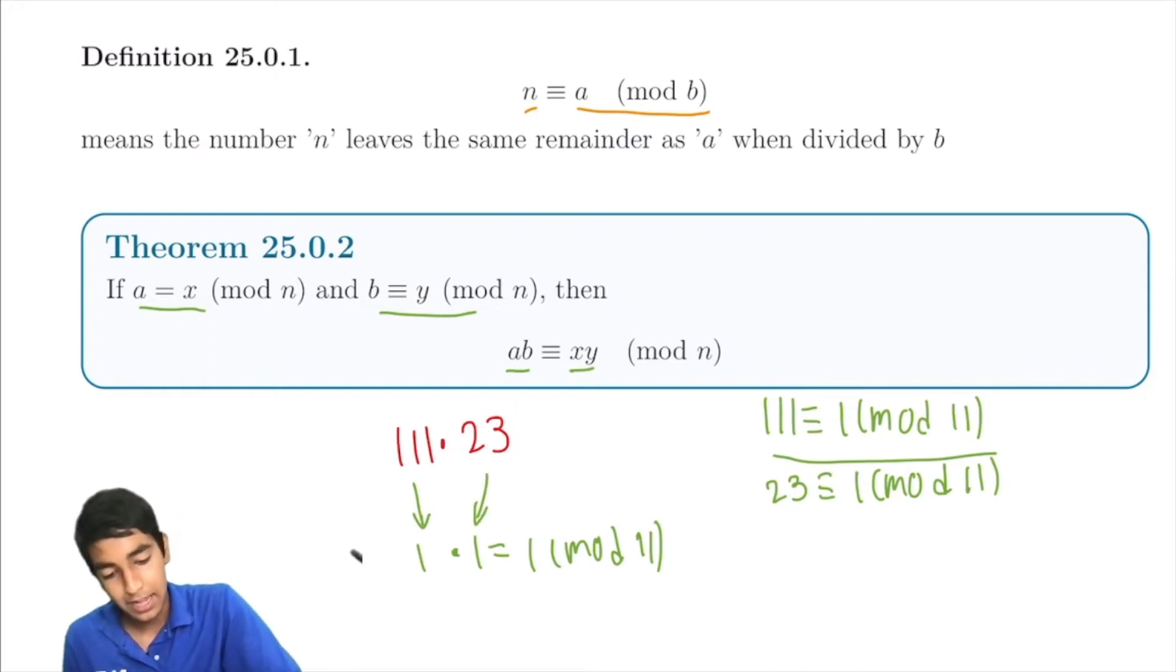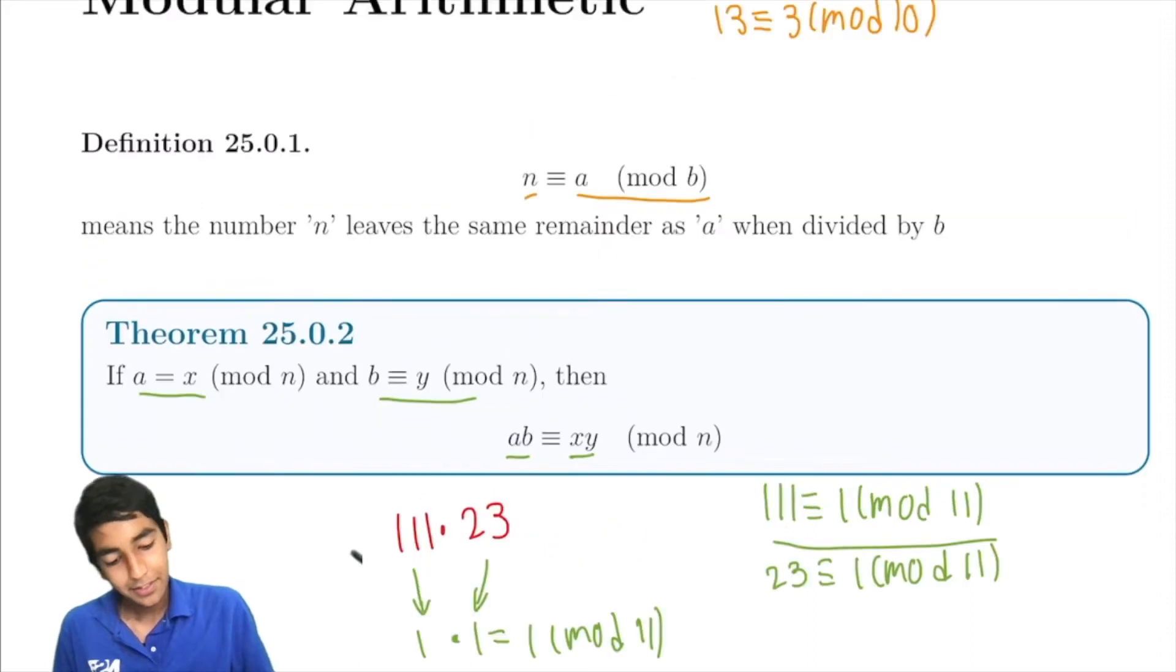That's essentially what this is saying. The product of two numbers, the remainder by n, is just the remainder of each of the numbers by n multiplied together. And this is very cool, isn't it? You don't have to just multiply this whole thing out.